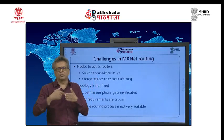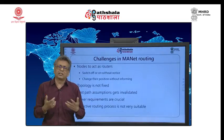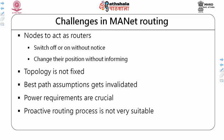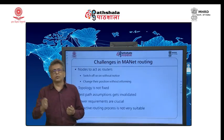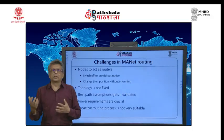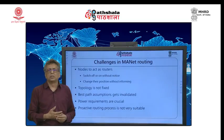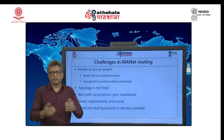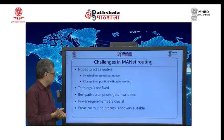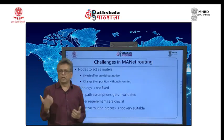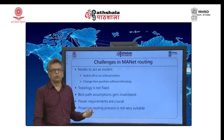One best path at this point of time is through B; next moment it is not there because B itself is not there. Power requirements are also very crucial. For example, if I have to route through B which is the shortest path but the battery of B is low, I cannot do that — I will have to find an alternate route, even if it is longer. I should not force an intermediary into routing my packets when its battery is dipping. Proactive routing, which works well in other cases, is not going to work here.